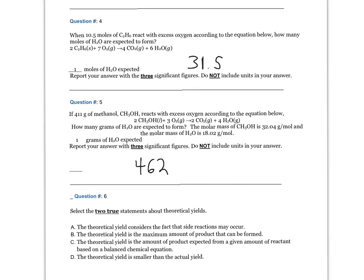Question number six. Select the two true statements about theoretical yields. The answers are B: the theoretical yield is the maximum amount of product that can be formed, and C: the theoretical yield is the amount of product expected from a given amount of reactant based on a balanced chemical equation.